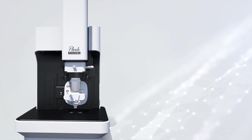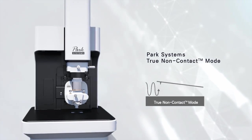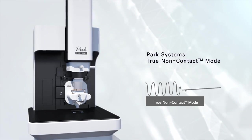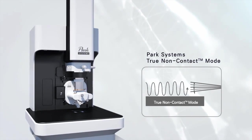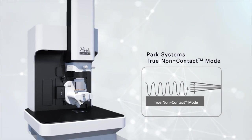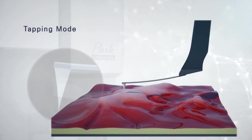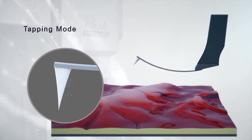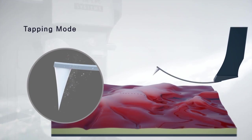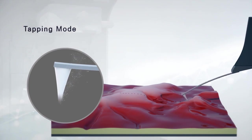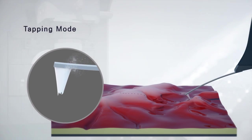In addition, true non-contact mode AFM showcases a different aspect of Park Systems technology that allows users to perform measurements without any contact between the tip and sample. The tapping mode of other companies measures samples in a way that leads to sample damage and tip blunting, resulting in lowered accuracy.